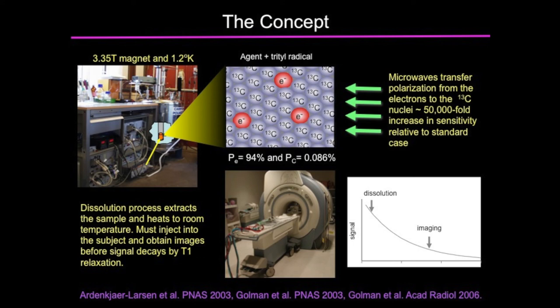The real trick these people developed was not only this methodology, but also how do you get it out of there and very rapidly get it into the biological sample and make the measurement. The dissolution process lifts this sample out of the liquid helium bath — a very hot liquid goes in under pressure and comes out again and you collect it in a little sample tube. You need to take that tube and inject it — run like hell to the magnet, inject it into the sample and make your measurement. All the time you're doing this, the signal is decaying with the characteristic relaxation time of the compound at that particular temperature. You have about two to three minutes to get from here to there and make your measurement.